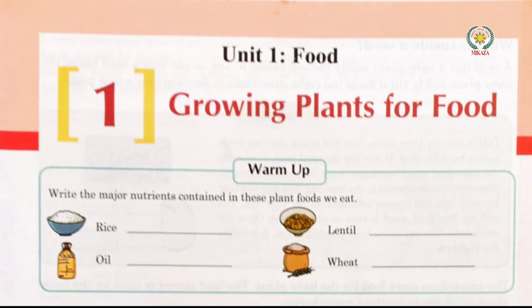Good morning students. Today we'll begin our Unit One: Food Growing Plants for Food. Take out your science books and come to page number one. We will begin our chapter. Let's study together. Write the major nutrients contained in these plant foods we eat.